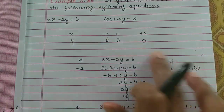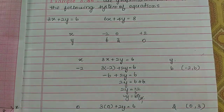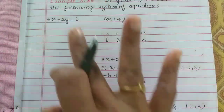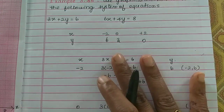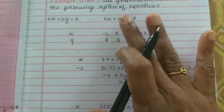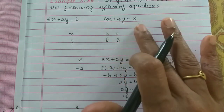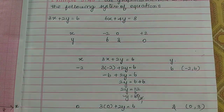Now you have a tabular column. We have the three points for the first equation. We have another equation: 6x plus 4y is equal to 8.